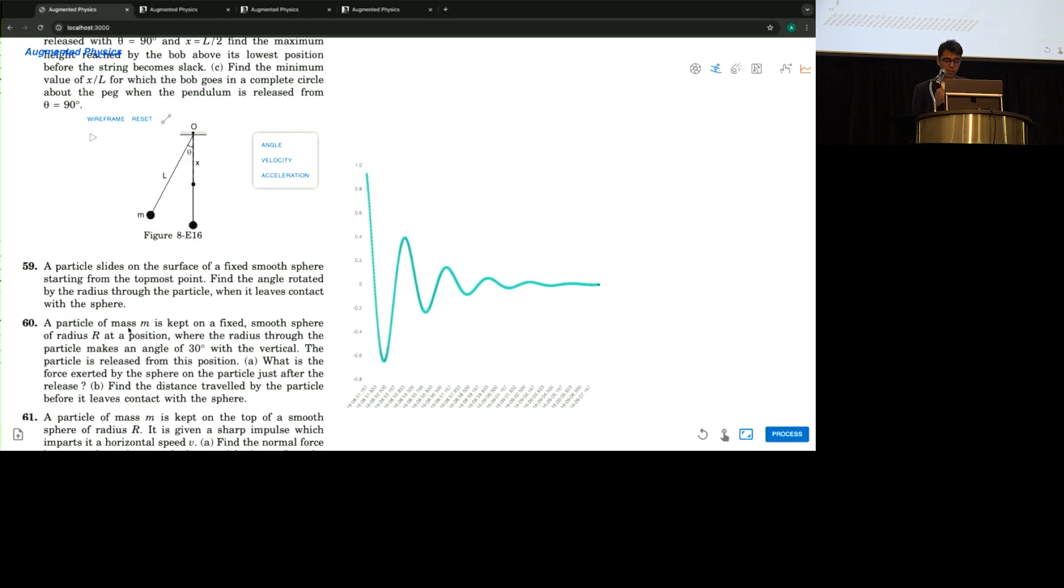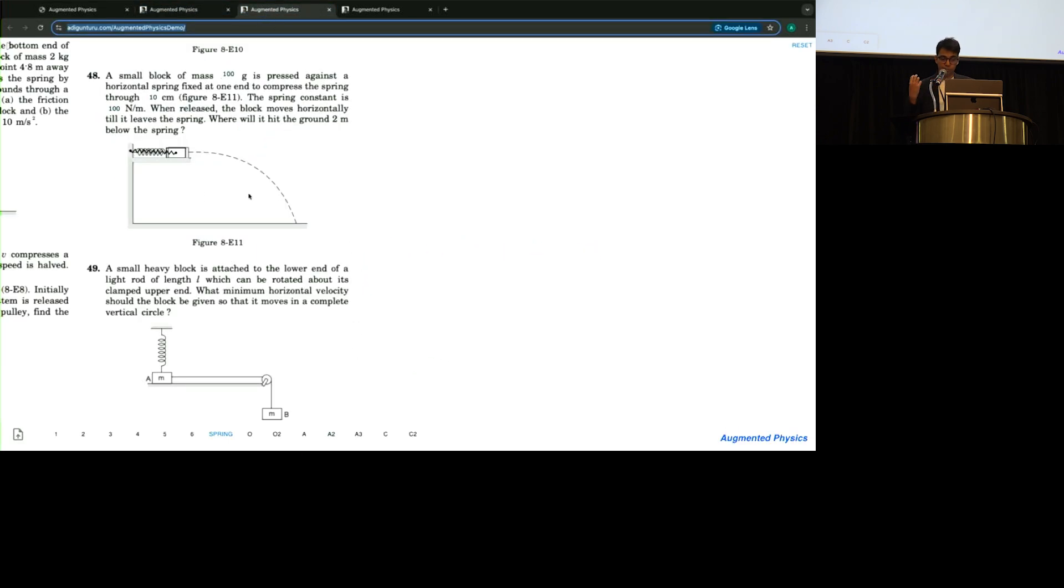And lastly we have the fourth augmentation strategy, which is bidirection binding. For example, of course textbooks have text, obviously. So what if I can connect the text directly with the diagram? For example, in this case the text says compress the string through blah blah blah centimeters. So I can change the amount of the number in the text to change the simulation directly. So I'm compressing the string through the text and then now to just release it. So basically in this quick way you can make various kinds of animations and visualizations and turn static boring physics textbooks into dynamic and engaging content.